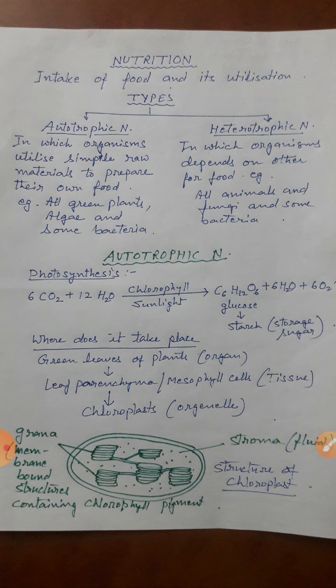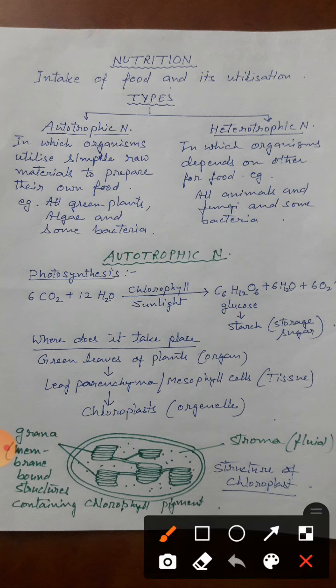Different organisms take food in different ways and they take different foods. Basically nutrition ko hum do types mein baad sakte hain: autotrophic and heterotrophic nutrition.